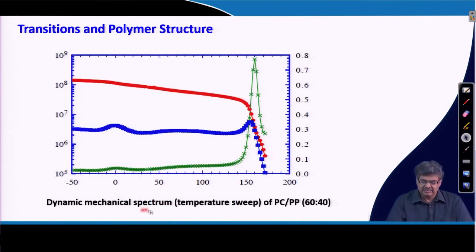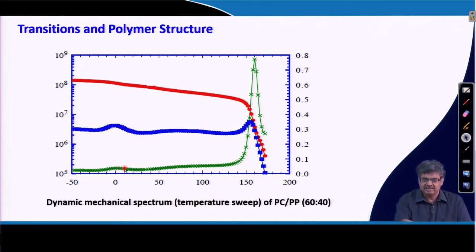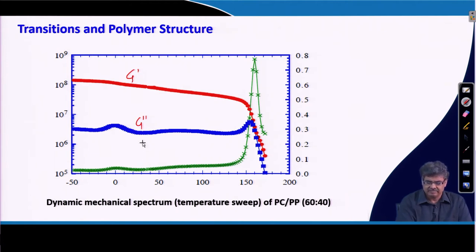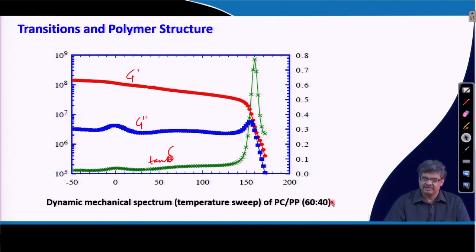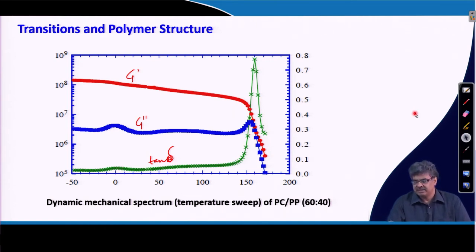This is the DMA spectrum for a blend of PC and PP in a temperature sweep. Here, the two peaks of tan δ correspond to one around 0°C for polypropylene and another around 150–160°C for polycarbonate. Because this is a glass-filled sample, the Tg is slightly higher than 150°C, around 160°C. Using DMA we can measure temperatures corresponding to different transitions like the glass transition temperature.